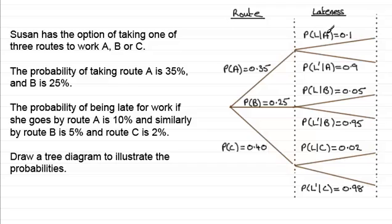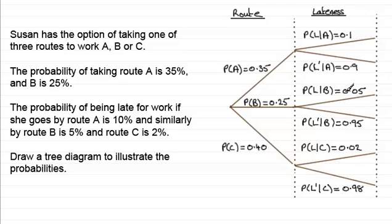We now have the probabilities of either being late or not late, dependent on the route — so we've got conditional probabilities here. The probability of being late given you took route A is 10%, written as 0.1. The probability of not being late given route A — you can use a dash or a bar over the top — is 0.9. This pair should add up to one whole one. Similarly, if you take route B: probability of being late given route B is 0.05, and not late given route B is 0.95. And similarly for route C.